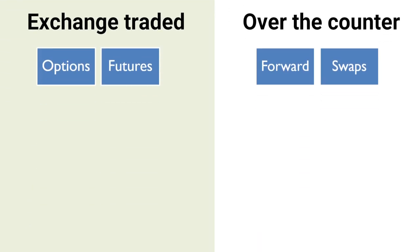There are generally two types of derivative contracts. The first is exchange traded, and the second is over the counter. In exchange traded contracts, a middleman — the exchange — is involved. In India, for stocks it is NSE or BSE, and for commodities it is MCDEX. In exchange traded contracts, you do not know the other party directly — you deal with the exchange.